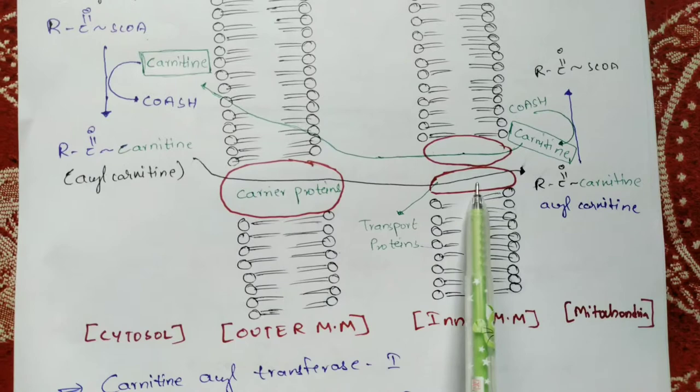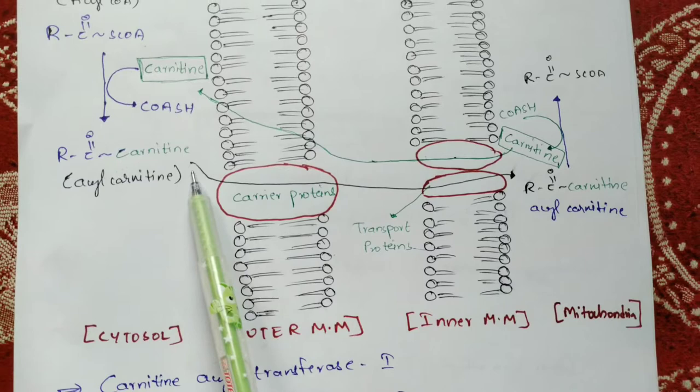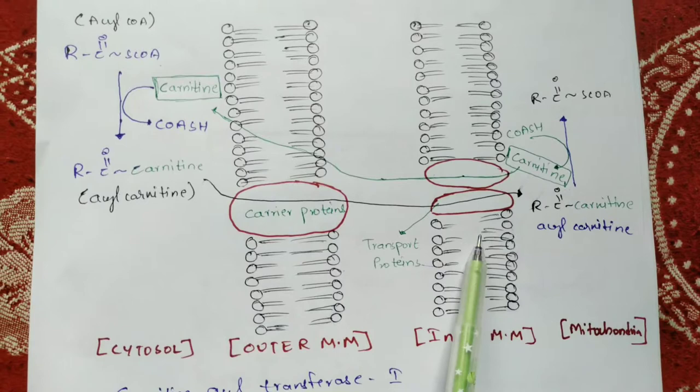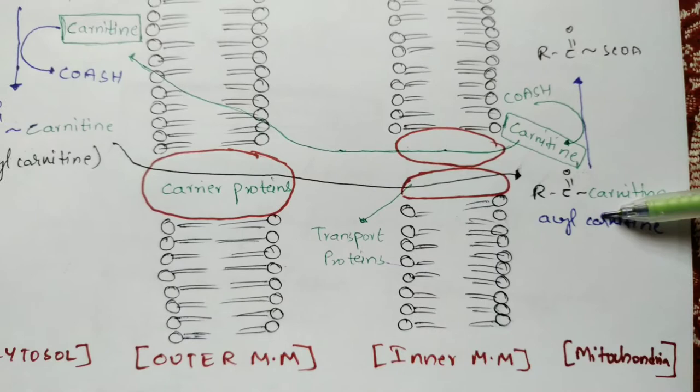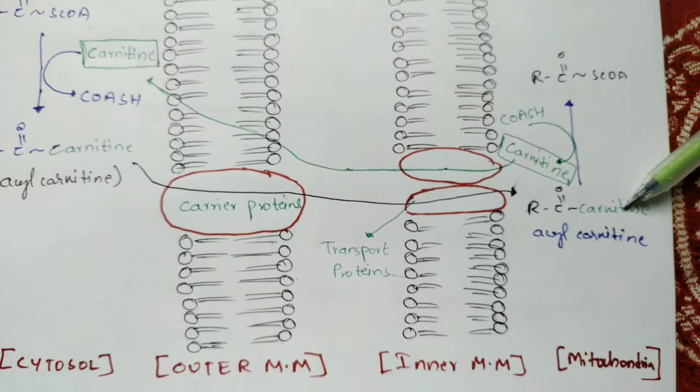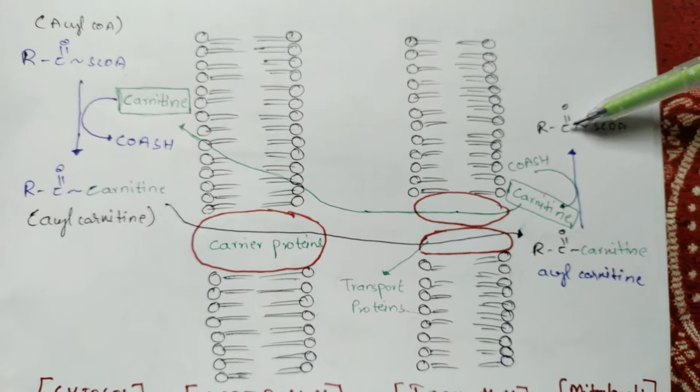Through the inner mitochondrial membrane, transport proteins play a major role in transporting the fatty acyl carnitine into the mitochondrial region. Once inside the mitochondrial region, the fatty acyl carnitine gets converted back into fatty acyl-CoA through a reverse process.